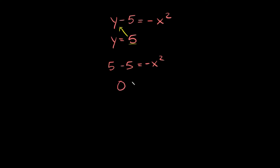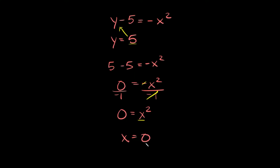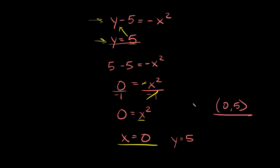To get rid of the negative sign, we divide both sides by negative 1. So we get x squared equals 0. The only number we can plug in for x is 0, because 0 squared equals 0. So we have one solution: x equals 0. And since the second equation already tells us y equals 5, our ordered pair solution is 0, 5. This problem has only one solution.